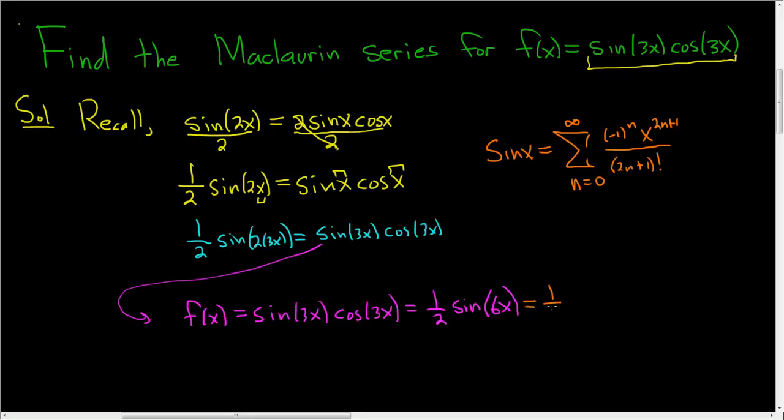This is 1 half, the infinite sum, as n runs from 0 to infinity. And here we have 6x, so that's not really going to affect the negative 1 to the n. So we still have the negative 1 to the n.